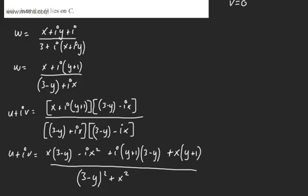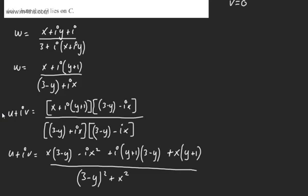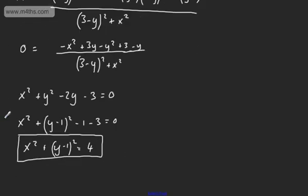So that's all done. We've fulfilled what they wanted us to do — we've shown that Q lies on C by arriving at x squared plus (y minus 1) squared equals 4.